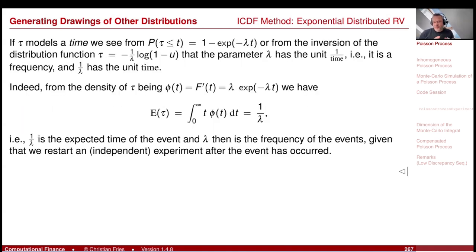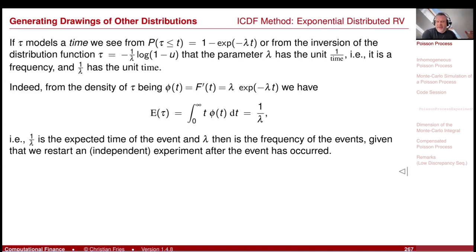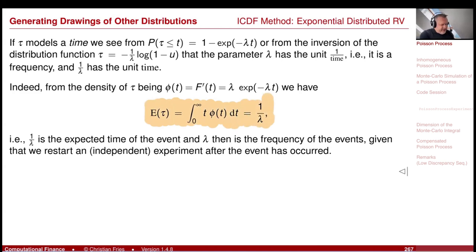The parameter lambda has a nice interpretation. You observe e^{-lambda*t} in the distribution function. If t has the unit of time, then lambda has the unit 1/time, so lambda is a frequency. That means 1/lambda is a time, and actually 1/lambda is the expected time where this random time occurs. We had the result that E[tau] = 1/lambda, where tau has an exponential distribution.